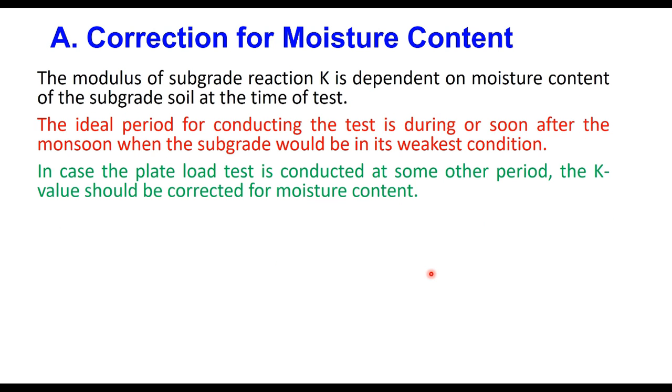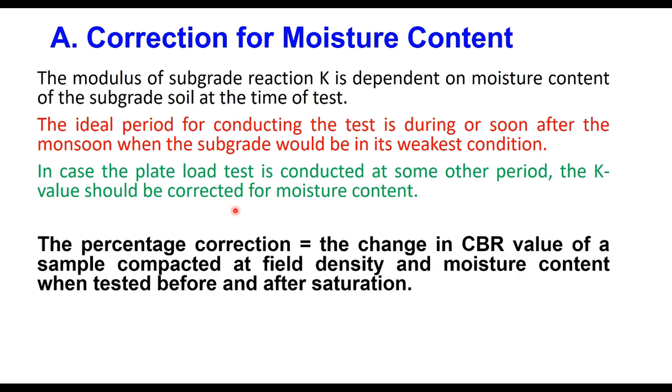The k value obtained from plate load test is corrected for three parameters. The modulus of subgrade reaction is highly dependent on moisture content of the subgrade soil at the time of test. As in case of CBR, the ideal period for conducting the test is during or soon after the monsoon. In case the plate load test is conducted at some other period, it should be corrected for moisture content.